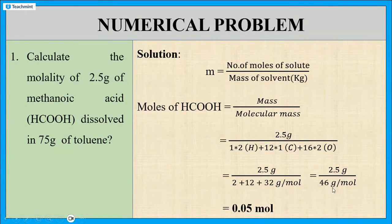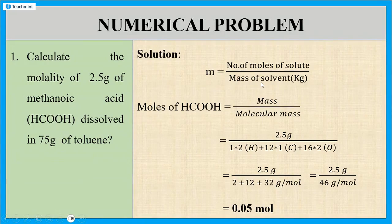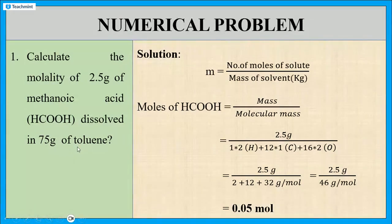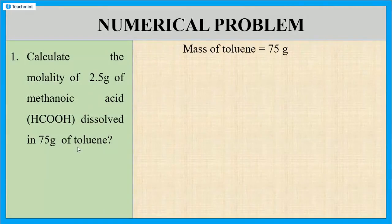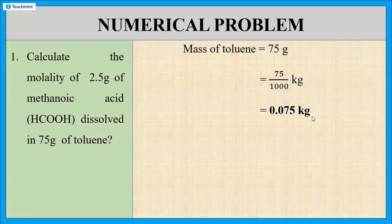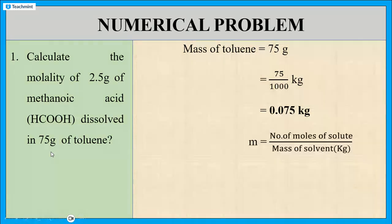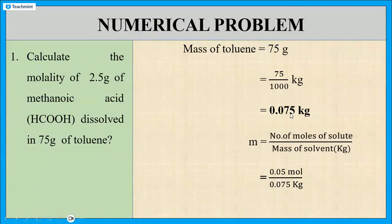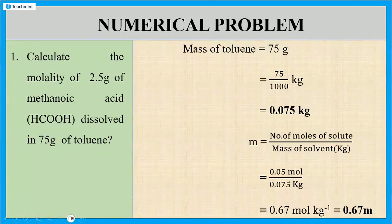The gram units cancel, so the unit is moles. Now we need the mass of the solvent. The mass of toluene is already given as 75 grams, but we need it in kg, so we divide by 1000, giving 0.075 kg. Now substituting into the molality formula: m equals 0.05 moles divided by 0.075 kg, and the answer is 0.67 mole per kg.